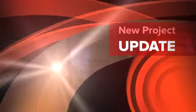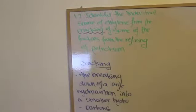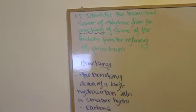The dot point we've been asked to explain is 1.2, which states: identify the industrial source of ethylene from the cracking of some of the fractions from the refining of petroleum.